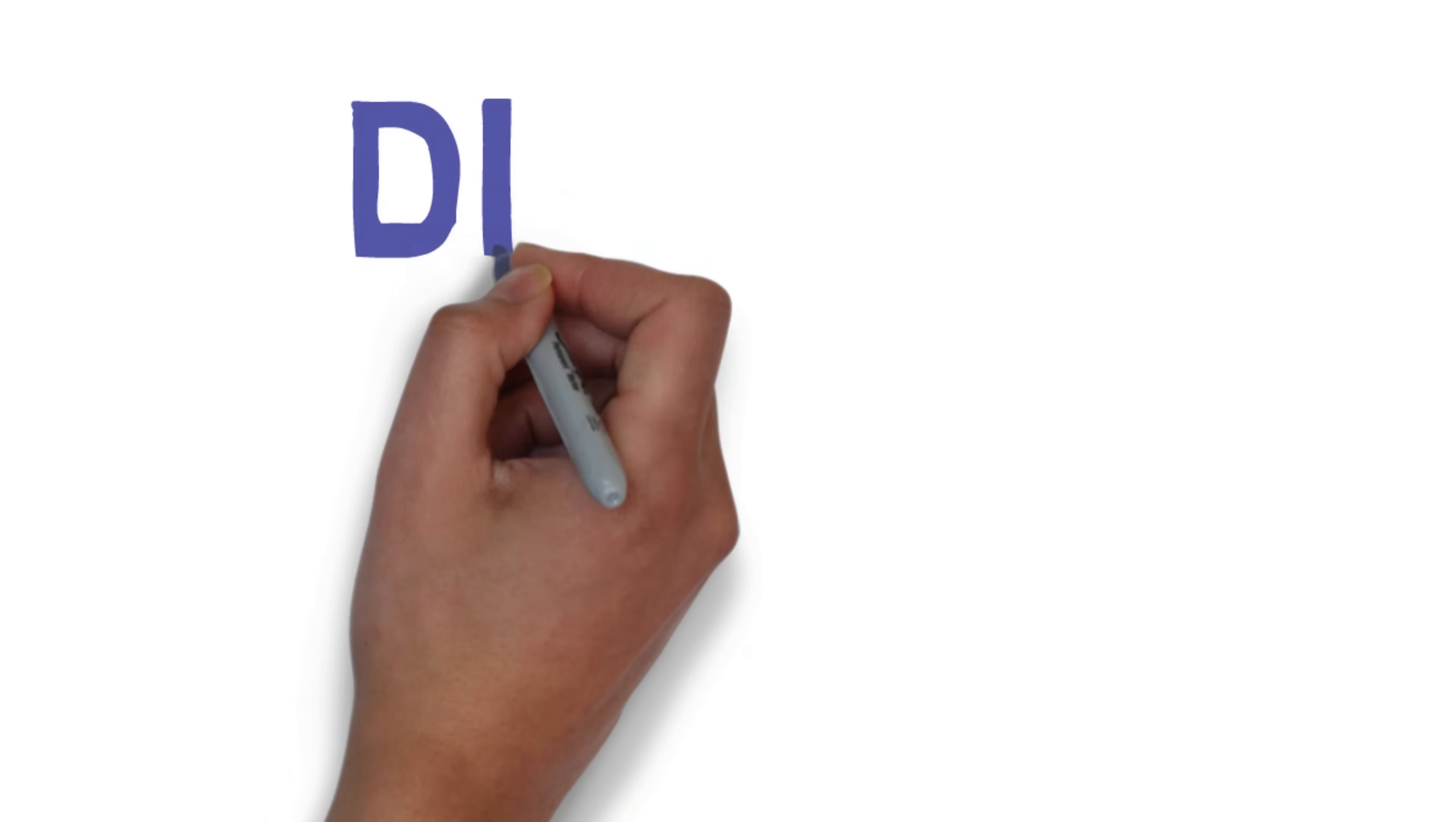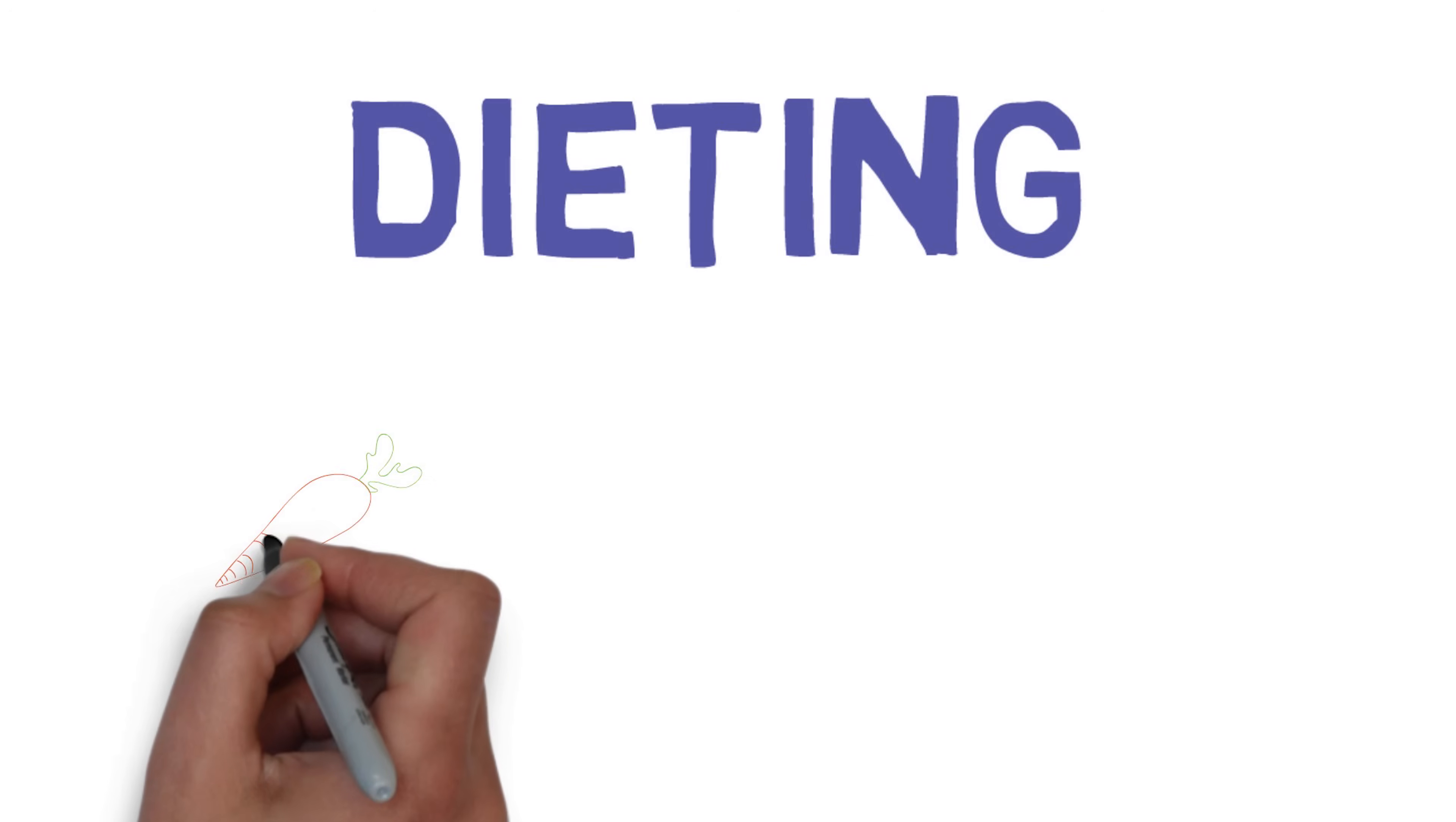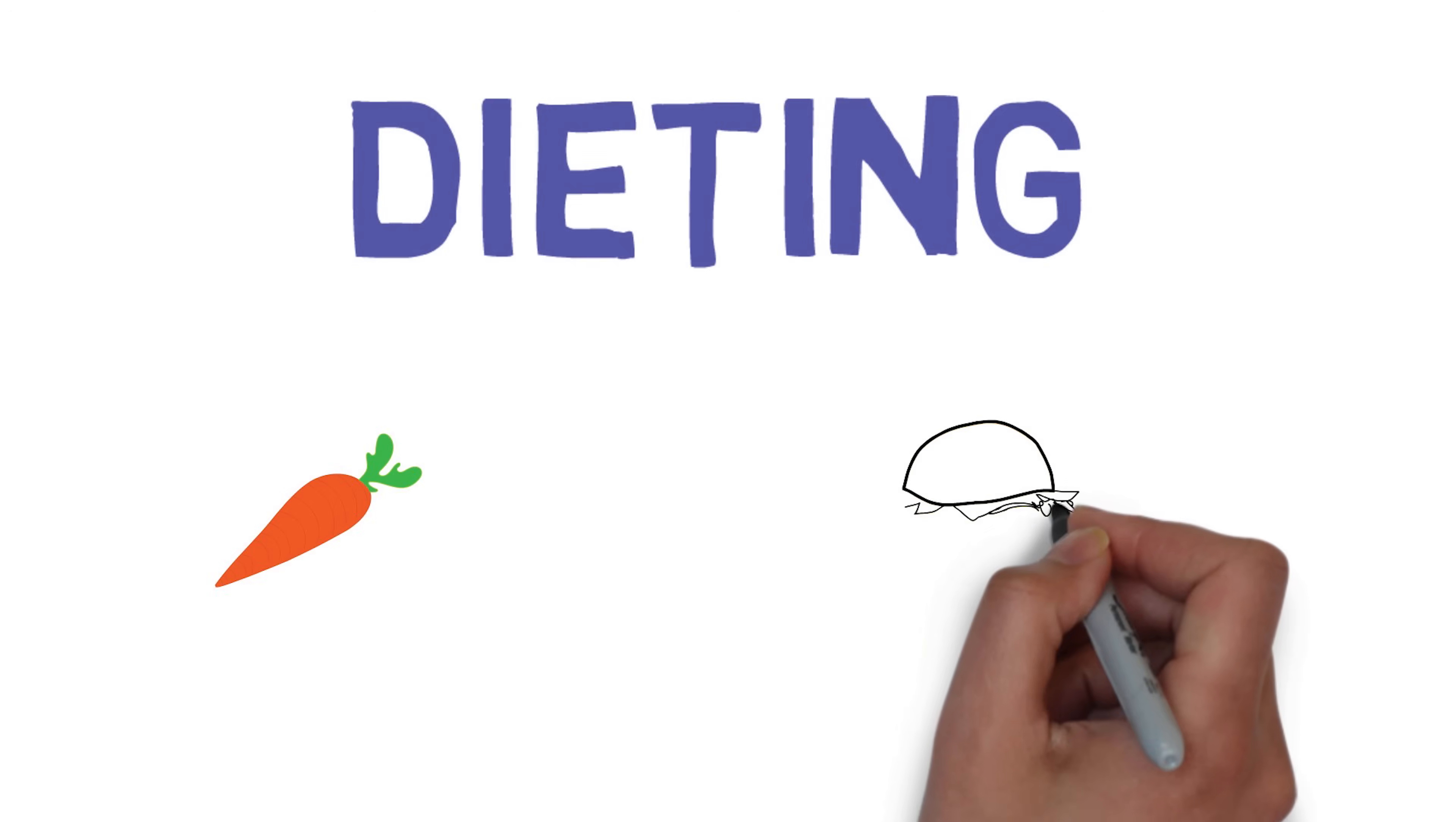Dieting. The definition of dieting is to restrict oneself to small amounts or special kinds of food in order to lose weight. With a definition this broad, it stands to reason that a diet can mean a lot of different things to different people.